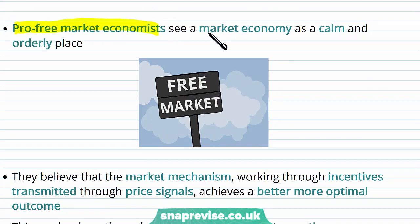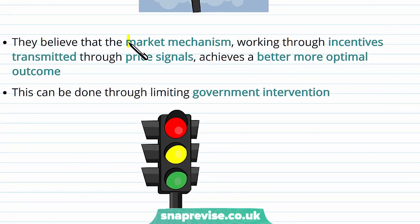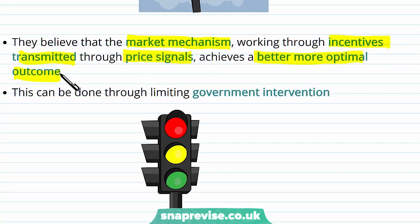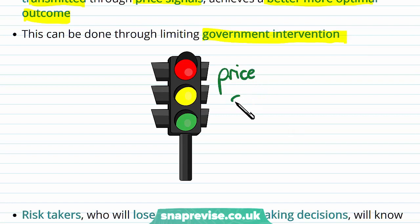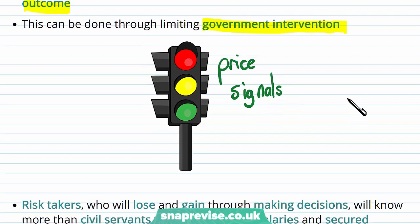Pro-free market economists see the market economy as a calm and orderly place — quite stable, straightforward, and not particularly turbulent. They believe that the market mechanism, working through incentives transmitted through price signals, achieves a better, more optimal outcome. In a pro-free market economy, government intervention is limited and we rely on price signals and other market signals such as profit levels to conduct market activity.